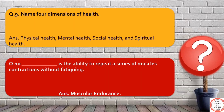The next question is about dimensions of health. We have four dimensions which tell about one's overall health. These are physical health, mental health, social health, and spiritual health. The last question of today: the ability to repeat a series of muscle contractions without fatiguing — the correct answer is muscle endurance.